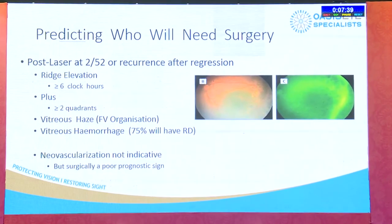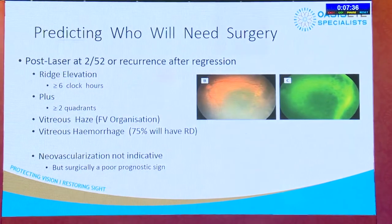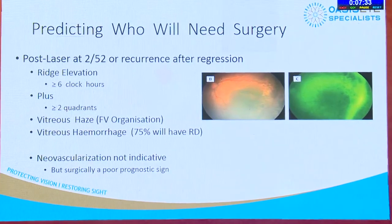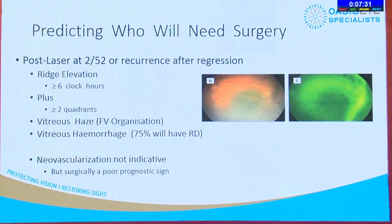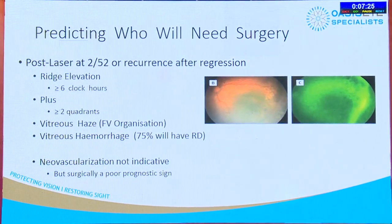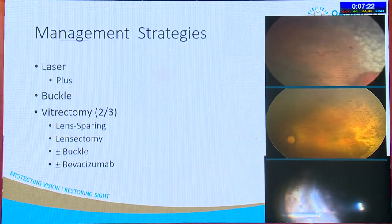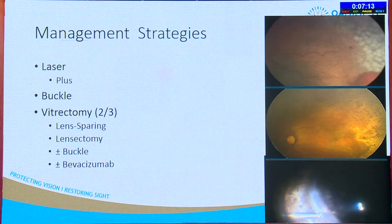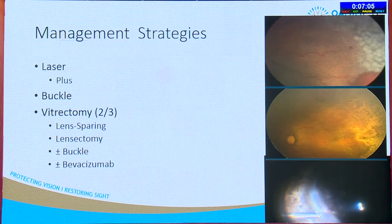In those who have vitreous hemorrhage, three-quarters will have an underlying retinal detachment below that blood. Neovascularization per se is not an indication for surgery, but is a poor prognostic sign. The mainstay is still laser — no one wants to operate on these children. We still do buckles, but two-thirds are vitrectomies. We try lens-sparing approaches; if tissue extends to the lens, you may need a lensectomy, with or without a buckle and anti-VEGFs.